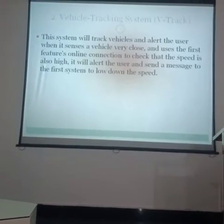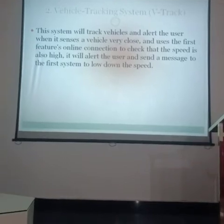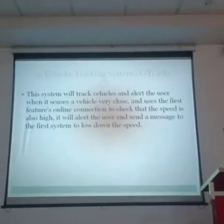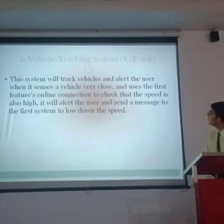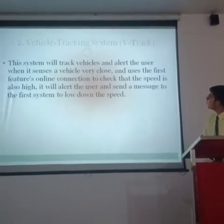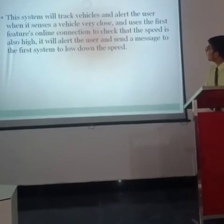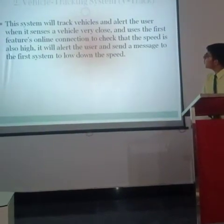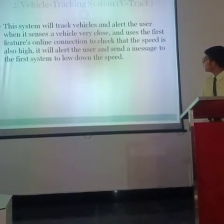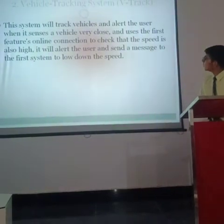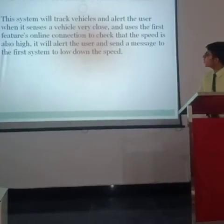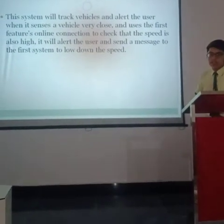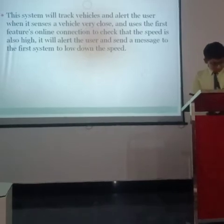Vehicle tracking system, B-TRAC. This system will track vehicles and alert the user when it senses a nearby vehicle and uses the first feature's online connection to check that the speed is also high. It will alert the user and send a message to the first system to slow down the speed. We will now explain this by simulation.